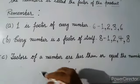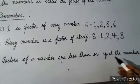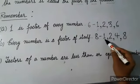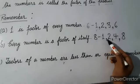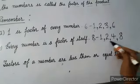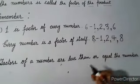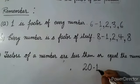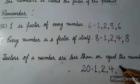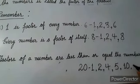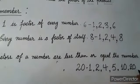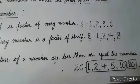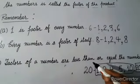Factors of a number are less than or equal to the number. As you can see, the factors of eight — one, two, four — are less than eight, and eight is equal to eight. Another example: factors of twenty are one, two, four, five, ten, and twenty. These factors are all less than twenty or equal to twenty.